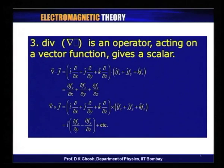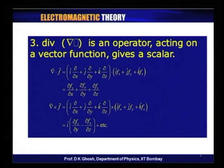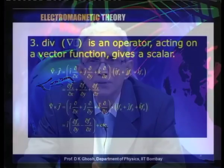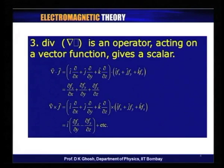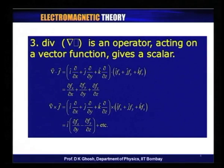Divergence, or del dot, on the other hand is an operator which acts on a vector function giving a scalar. The expression for divergence is almost similar to that of the gradient, excepting that after i d/dx plus j d/dy plus k d/dz there is a dot. If vector F has components Fx, Fy, Fz, then del dot F gives me partial Fx/dx plus partial Fy/dy plus partial Fz/dz.